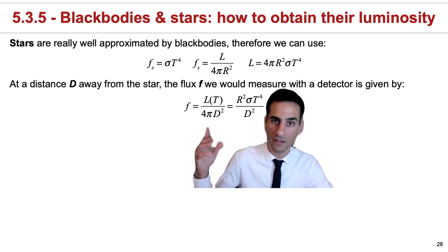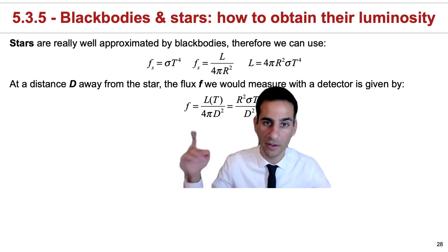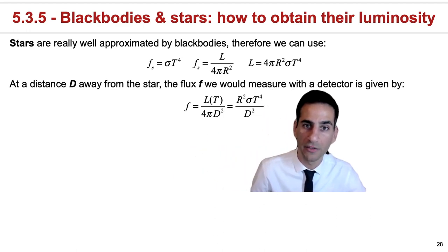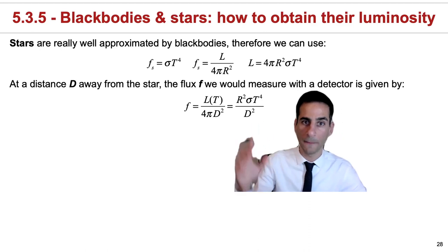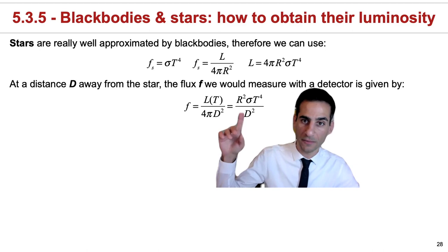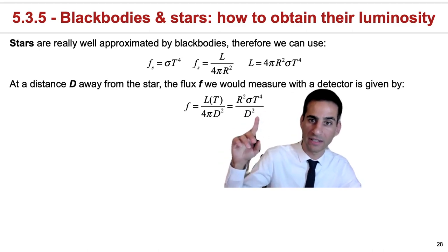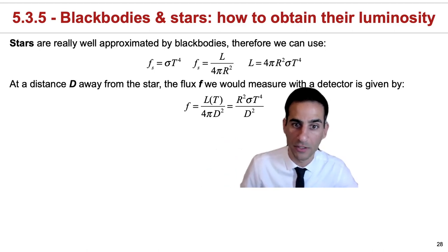This luminosity will depend on temperature as given above, divided by 4π D². And if you replace what a luminosity of a blackbody is into this equation, it means that the flux will depend on the radius of a star, the temperature of a star, and then how far away that star is. And this is really important to interpret observations.